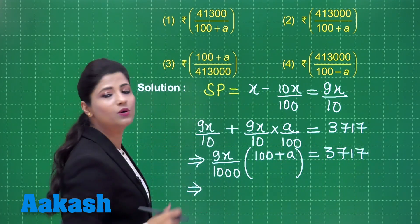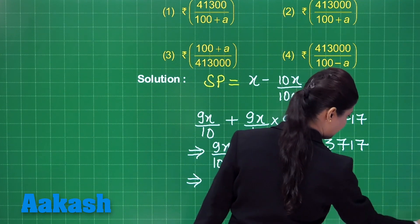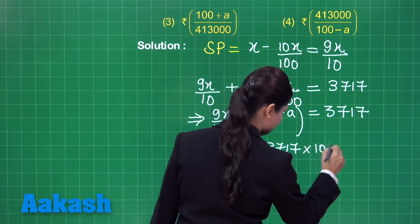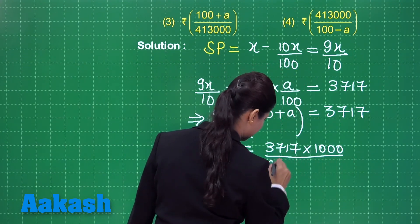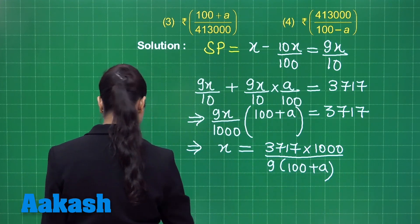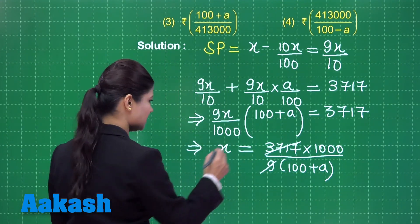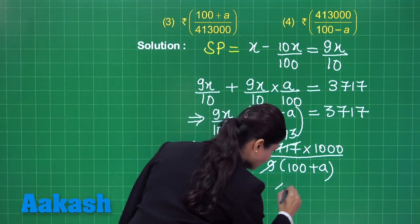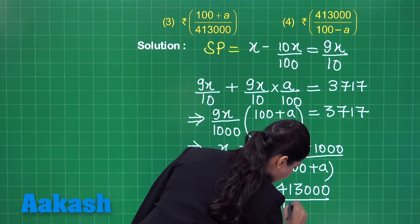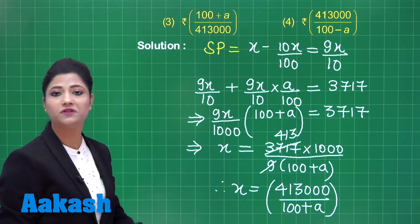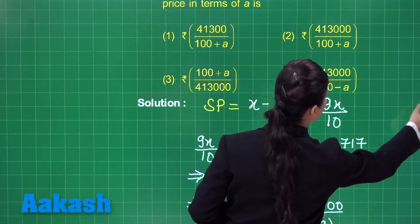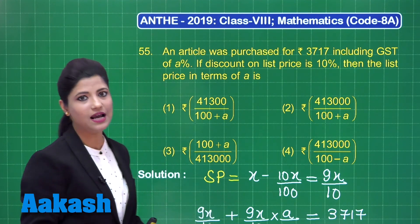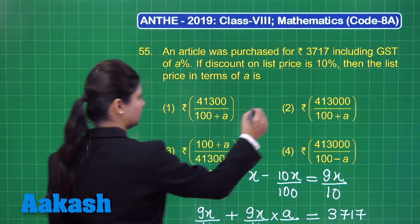Let us simplify and transpose the rest of the quantities to the other side to get the value of X. When I transpose, I get 3717 into 1000 upon 9 into 100 plus A. You can clearly find that 9 reduces here — 3717 divides to 413 — and this gives me a value of X equal to 4,13,000 upon 100 plus A. This is the list price in terms of the variable A.